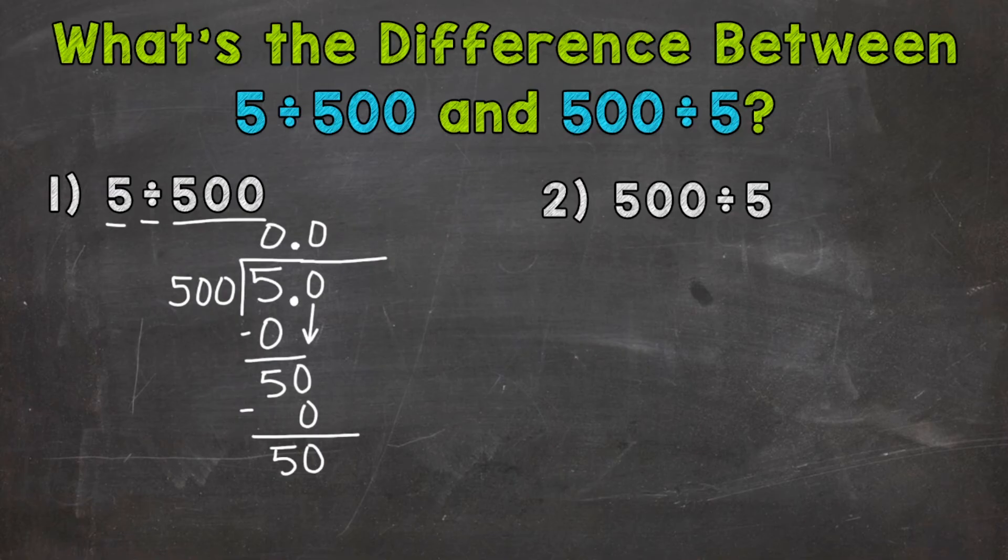So what we can do, we can use another placeholder 0 in the 100ths place. Again, still not changing the value of anything. So we can do that. Now let's bring that 0 down.